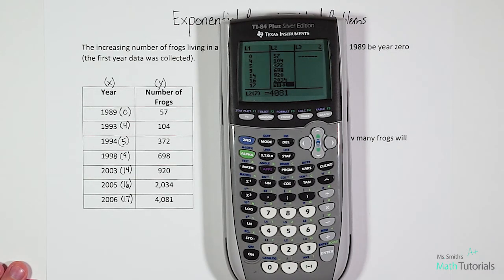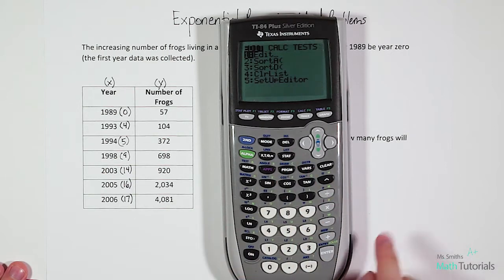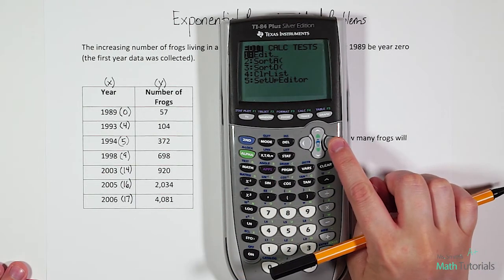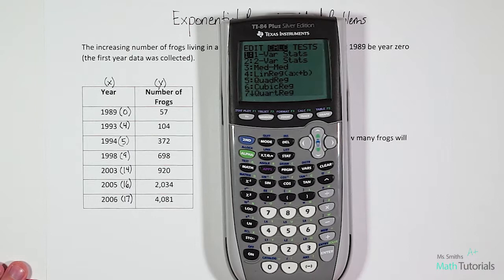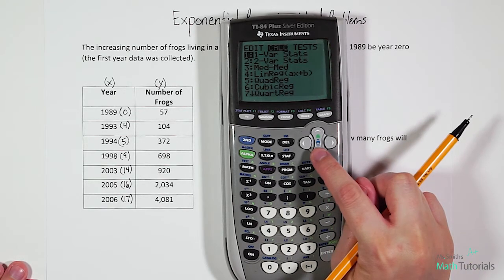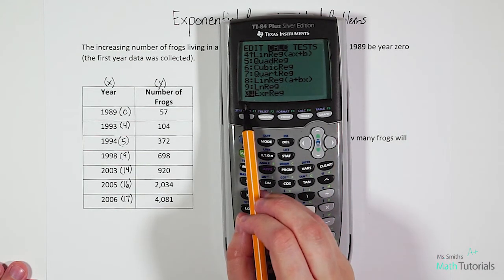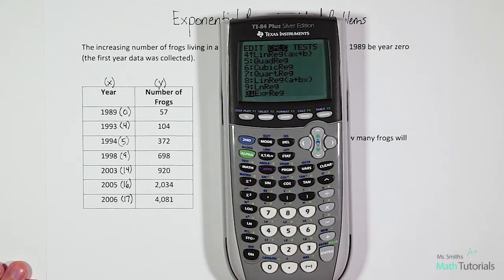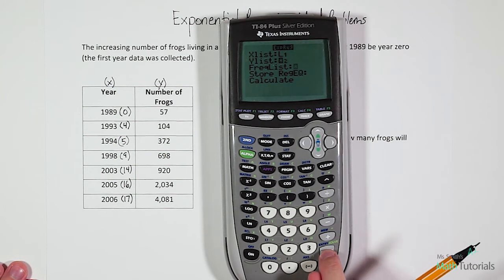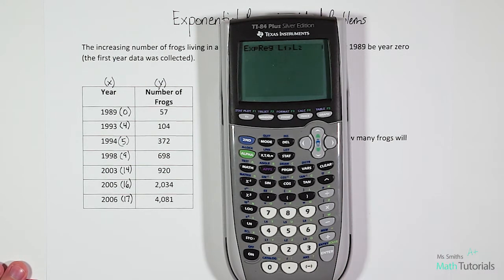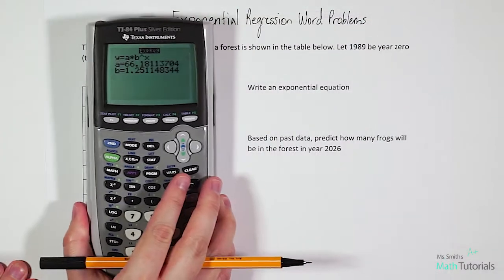Now that we have our data in the calculator, we want to hit stat again. This time we're going to right arrow over to the calc tab. Then you can either scroll all the way down to where you see exponential regression, it's going to be number zero right there. Once we get on this page, we can just hit zero. We want to just hit enter through this information, and it's going to bring up our equation. So let's interpret this information.